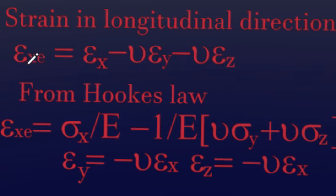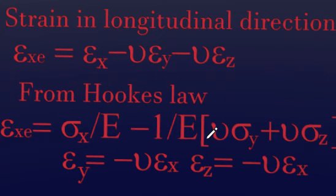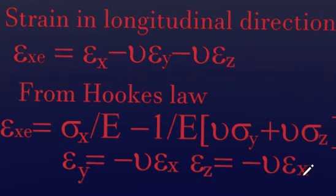If we apply Hooke's Law, we know that strain is stress divided by Young's modulus. We know the relationship between strain in the x direction and strain in the y or z direction from Poisson's ratio, so we can write a combined equation. It is not difficult to see how we arrive at this equation given the explanations and relationships already established.